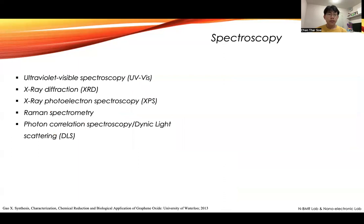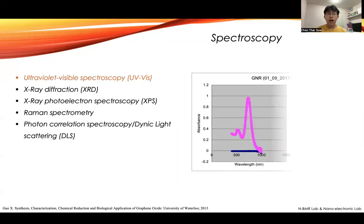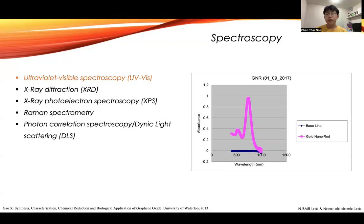The next category is spectroscopic techniques. There are many spectroscopic techniques, but here I give you a few examples. The first one is UV-Visible spectroscopy. UV spectroscopy gives the absorption or emission spectrum of particles in solution — mostly for nanoparticles, for example. The spectrum gives you the shape and size of the nanoparticles, and also the uniformity of the nanoparticle size distribution in solution. This is given by the UV-Vis spectroscopy.